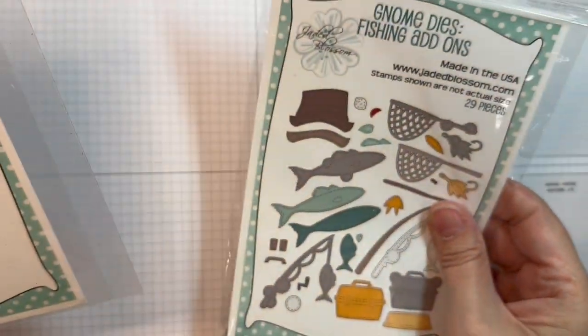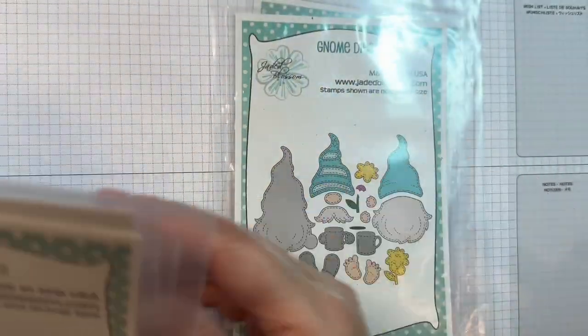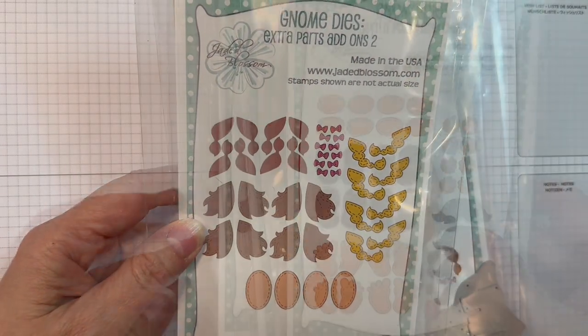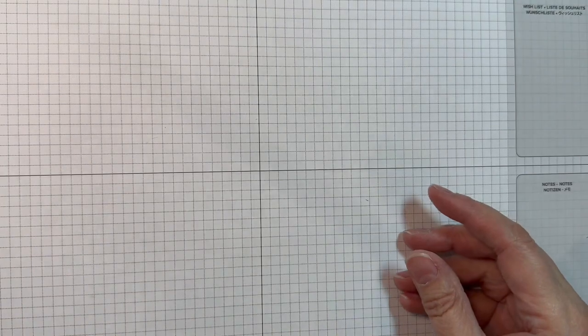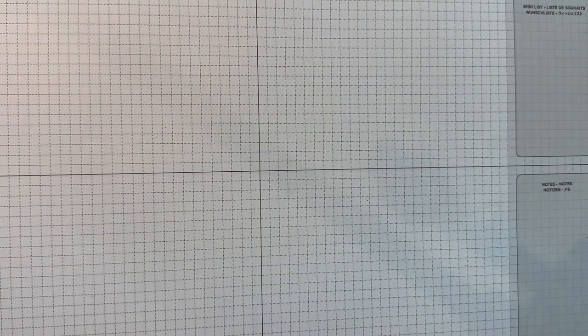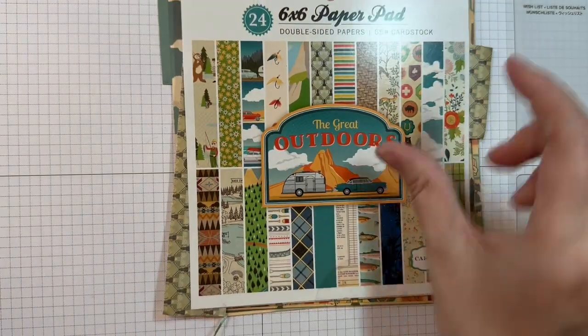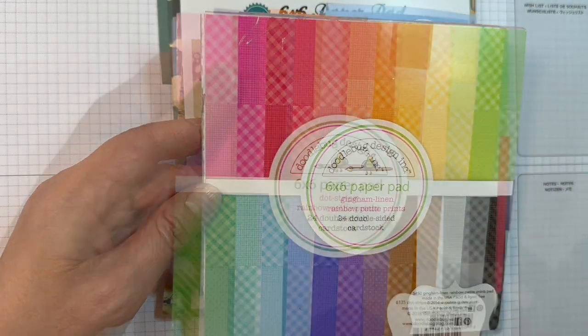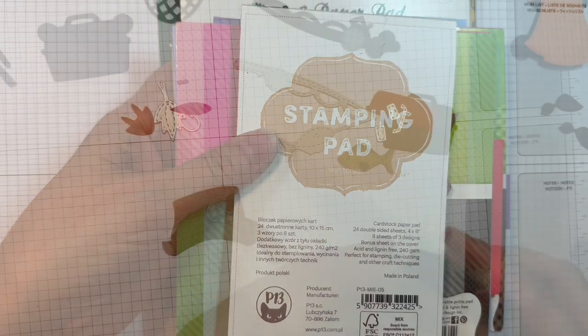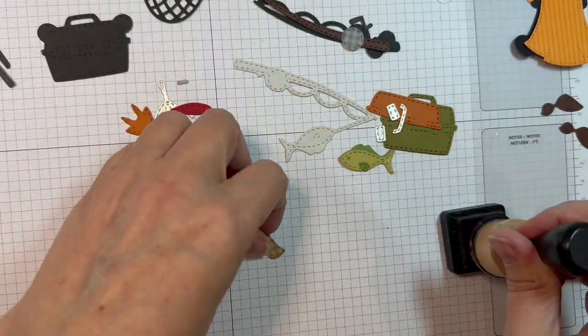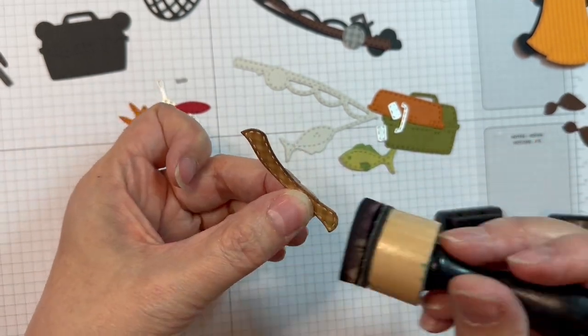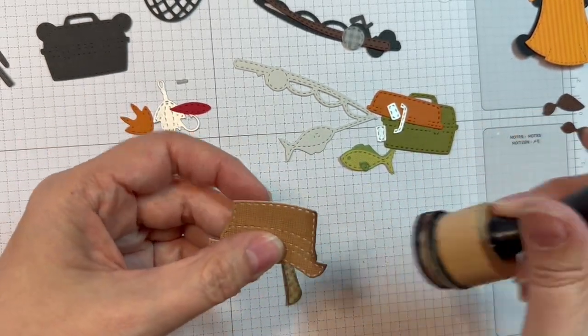So I'm using the Gnome Dies Fishing Add-ons along with the Gnome Dies, the Girl Gnome Dies, the Gnome Dies Extra Parts Add-ons 2 and 1. And I'm using Echo Park's The Great Outdoors 6-inch pad along with Gingham Linen Rainbow Petite prints from Doodlebug, Stripe P13 Stamping Pad Skin Tones, which is now available. The P13 Stamping Pad Skin Tones is available at Jada Blossom in the Jada Blossom store.